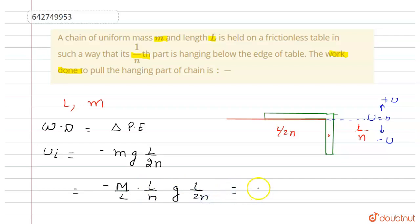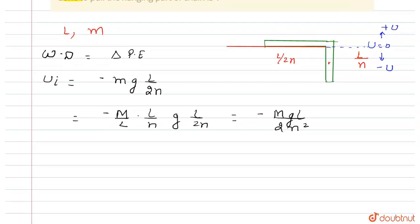Which equals minus m g l by 2n square. Now the final potential energy equals zero, because when we pull the chain and this chain is on the table, the final potential energy is zero. So we have to find the work done.